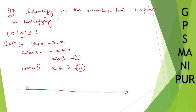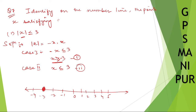This is a number line with points 0, 1, 2, 3, 4, 5 on the positive side and minus 1, minus 2, minus 3, minus 4, minus 5 on the negative side. Now, x is greater than or equal to, so if it is equal to, you take 3 here and make a mark like this, because it includes equal to.